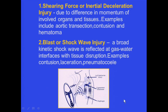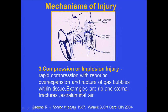Here we just see a cartoon showing a steering wheel injury, where the force of the injury is going backwards towards the spine. This would result in a pincer effect on both the spine, the aorta, and other structures besides the lung itself. A third possibility is an implosion or compression injury, with rapid compression with rebound over-expansion and rupture of gas bubbles.